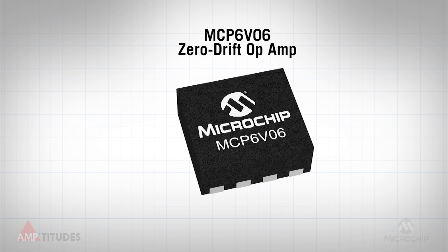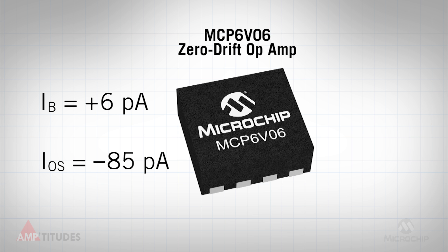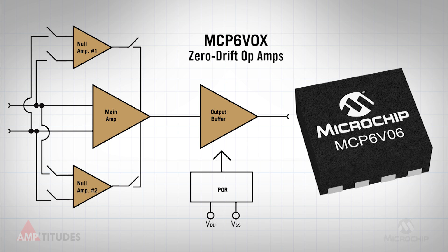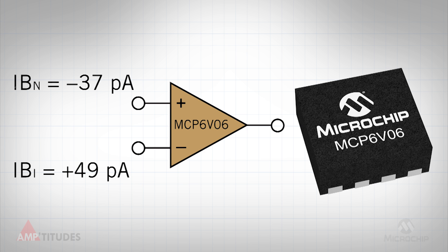Take the MCP6V06 Zero Drift Amplifier from Microchip. The datasheet for this device specifies a typical bias current of plus 6 picoamps at room temperature, but a typical input offset current of minus 85 picoamps at room temperature. Unlike traditional op-amp input stages, these zero drift operational amplifiers have switches at the inputs that add a current flow path through parasitic switch capacitances. It turns out that the current flows through the switches from one input pin to the other. So for the MCP6V06, Ib sub N is approximately minus 37 picoamps and Ib sub I is approximately a positive 49 picoamps.